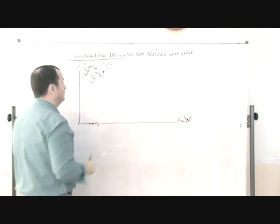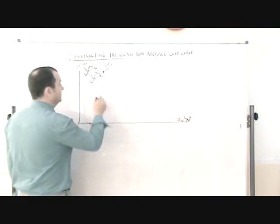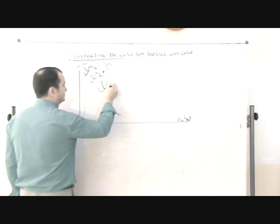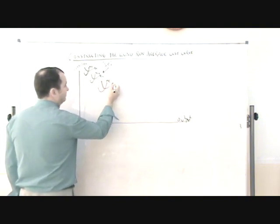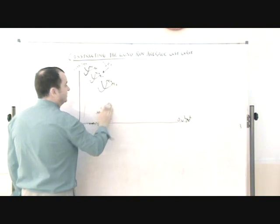And eventually they'll have to expand again their fixed factors of production. And they will face a third set of cost curves: marginal cost, average cost three, and so on and so on.